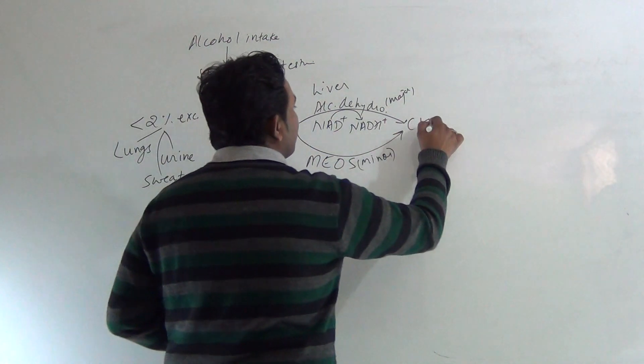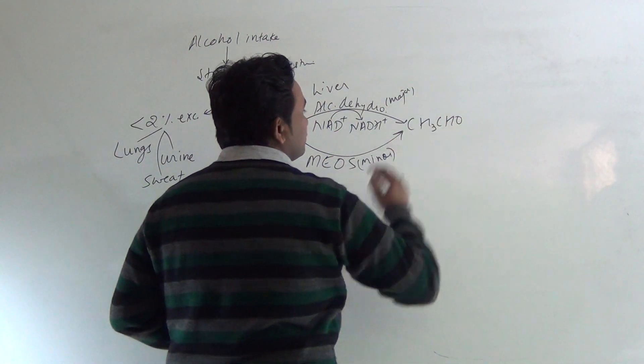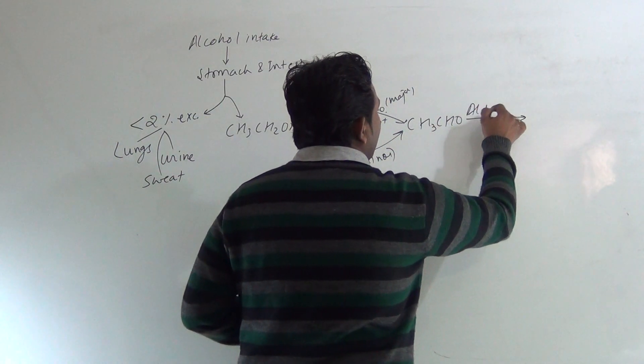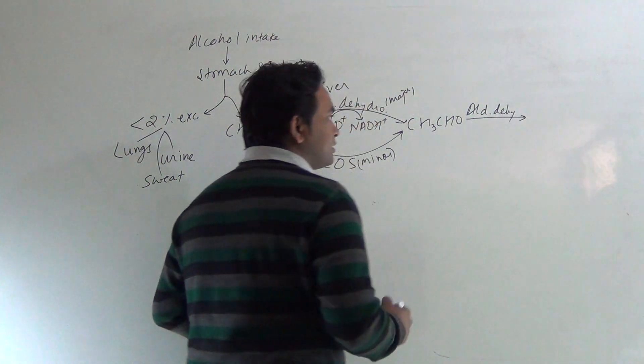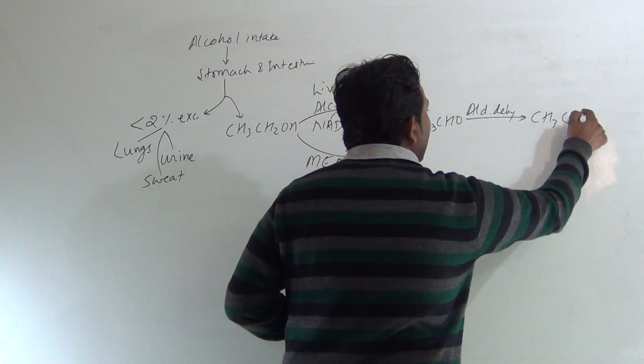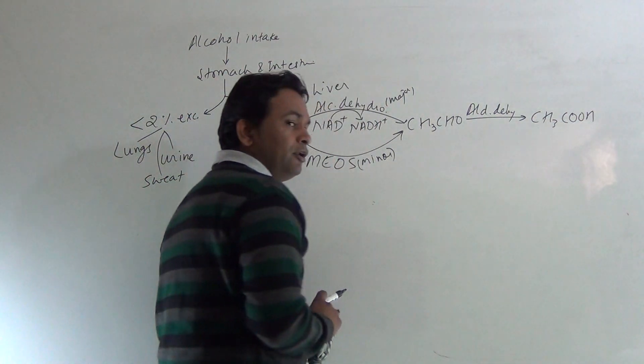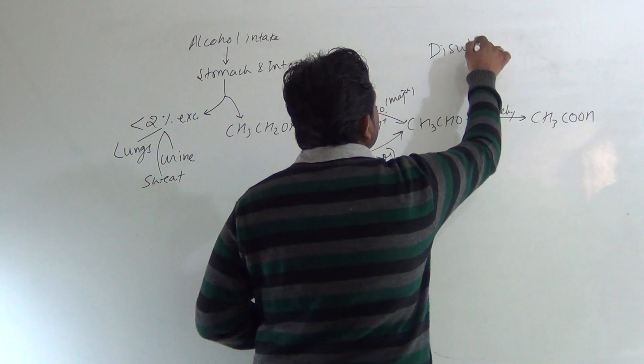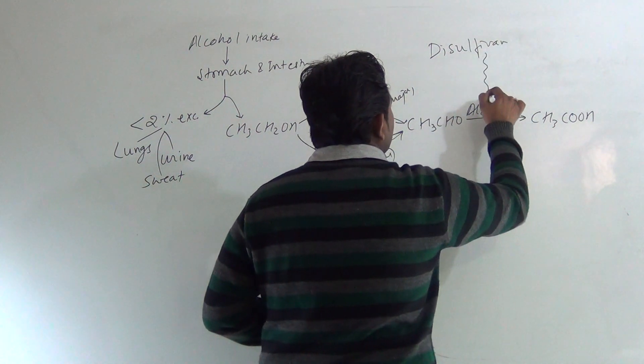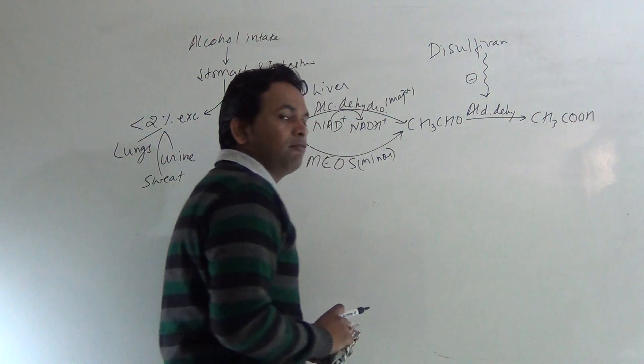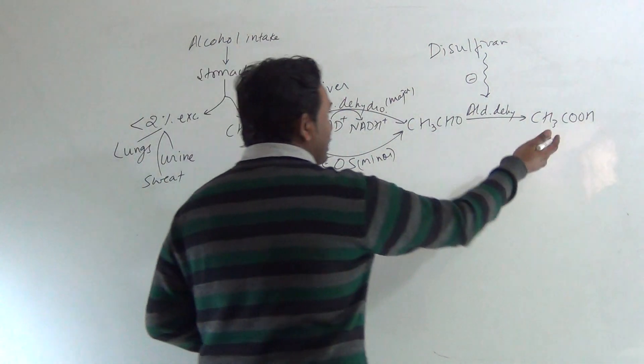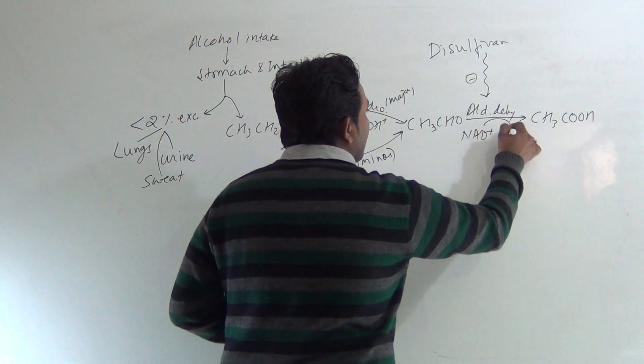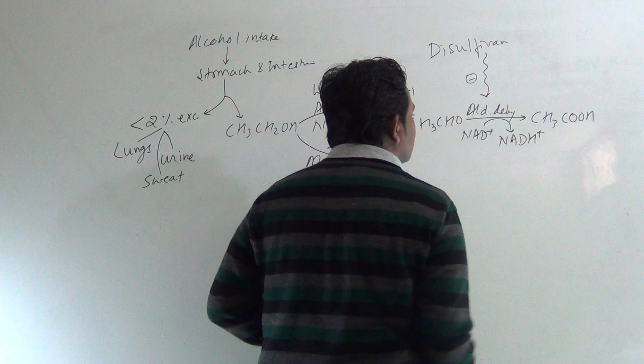Both result in the formation of acetaldehyde. This acetaldehyde is again acted upon by aldehyde dehydrogenase, which converts it into acetic acid. During treatment of alcoholism, Disulfiram drug is used, which inhibits the action of aldehyde dehydrogenase. During the conversion of acetaldehyde into acetic acid, again NAD+ is consumed to produce NADH.